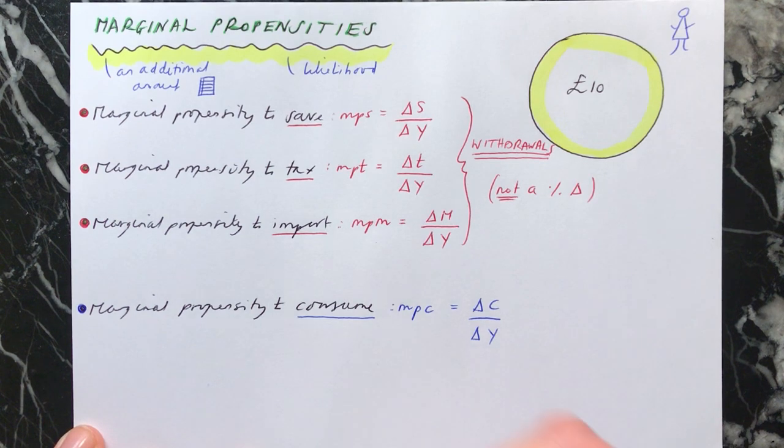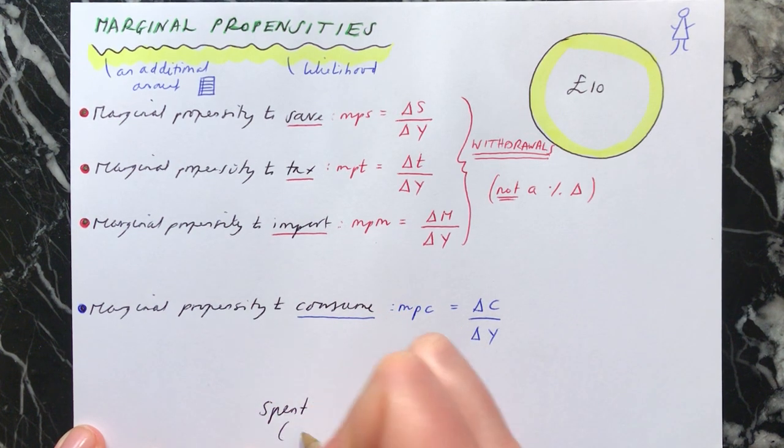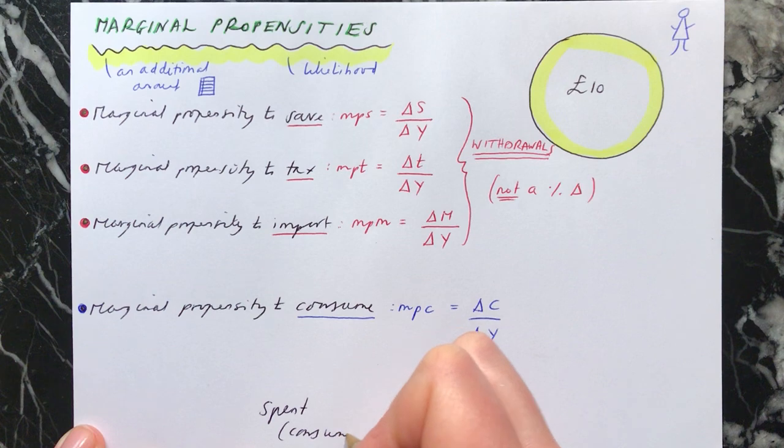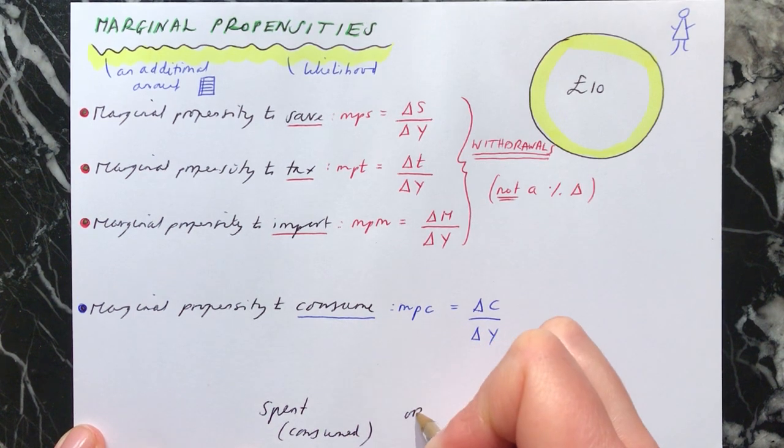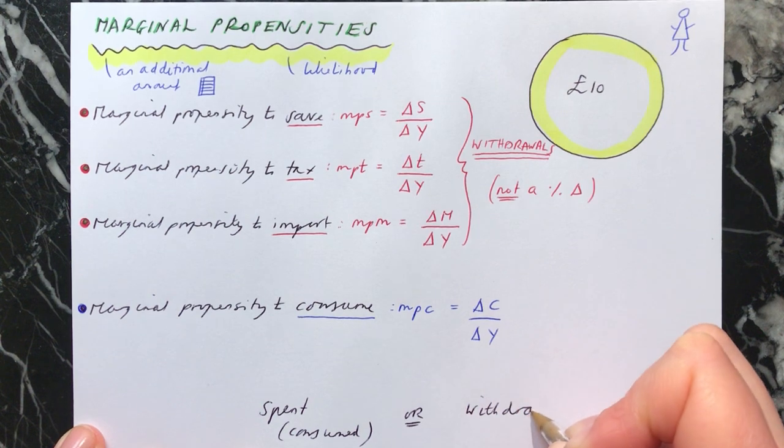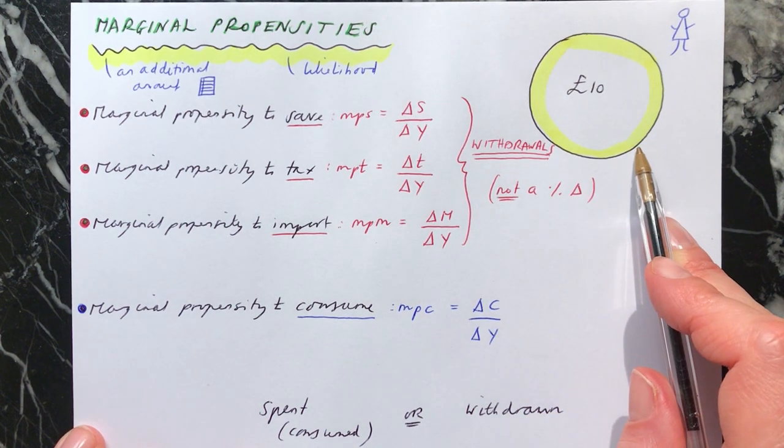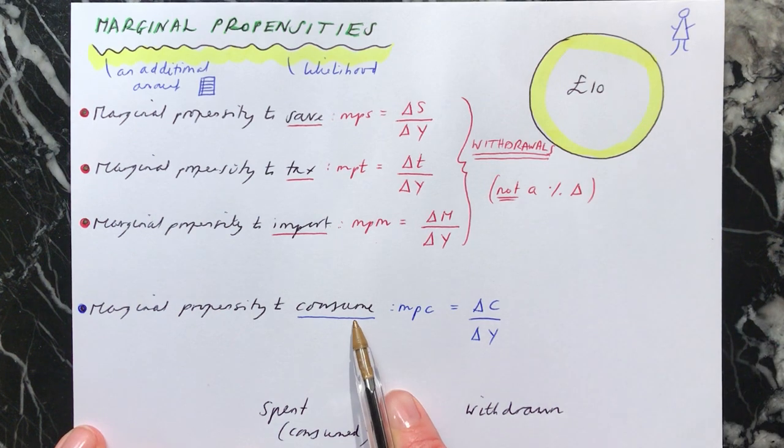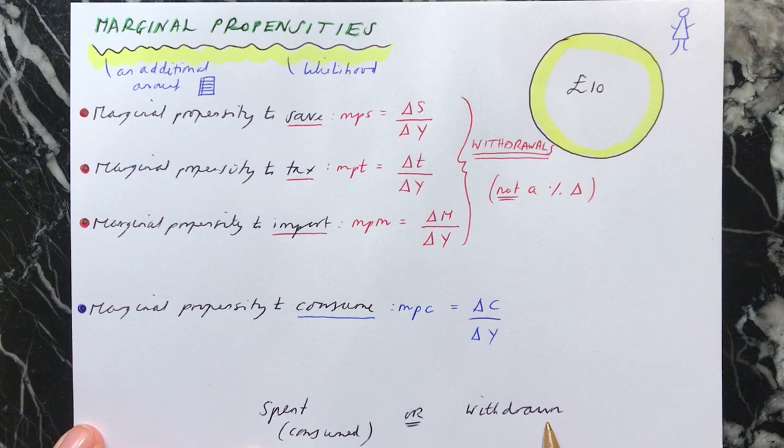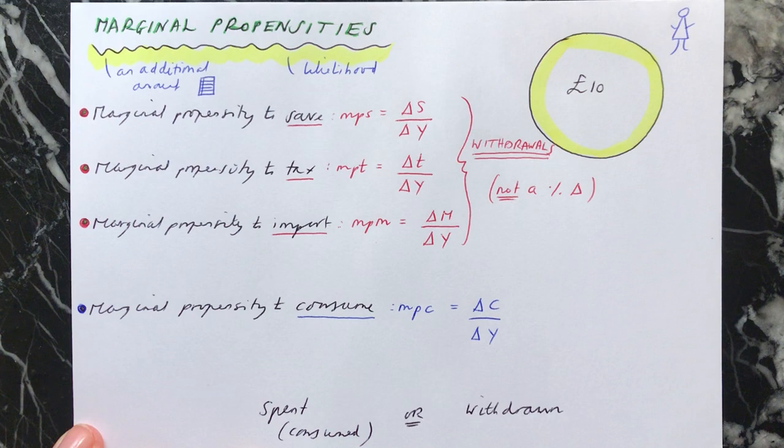So of this £10, either it's going to be used for consumption or it's going to be withdrawn from the circular flow of income. Because it will be saved, spent on tax or spent on imports.